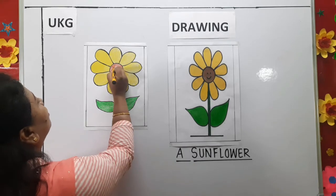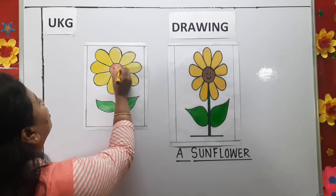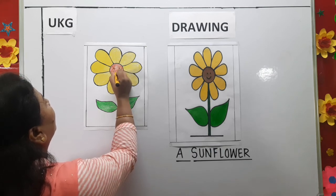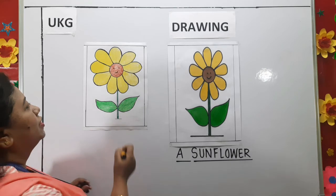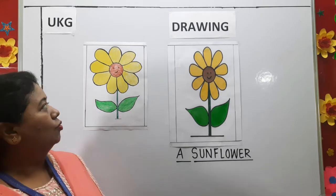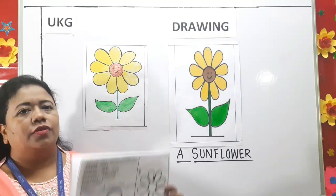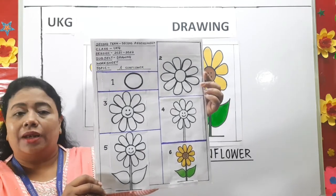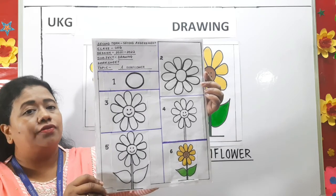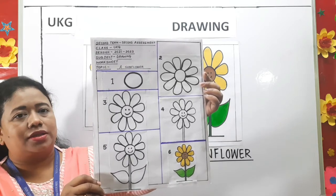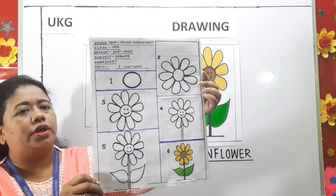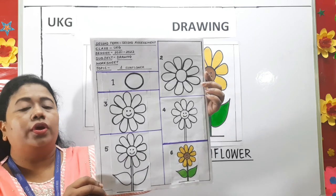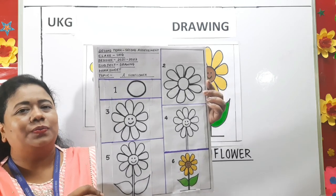Now I am going to make eyes. See children, how beautiful it looks. Children, this is the worksheet that will help you to make the sunflower stepwise. The worksheet will be uploaded on the school website. Kindly go through it. Thank you.